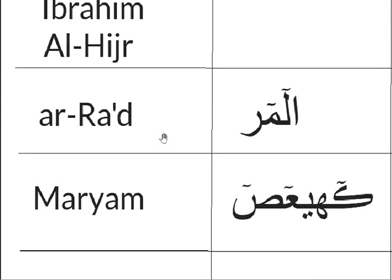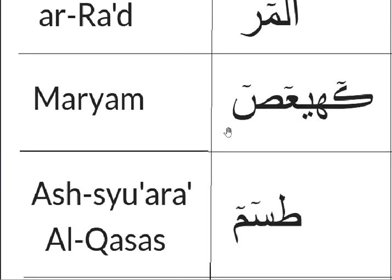One surah, Al-Ra'd, uses Alif, Lam, Mim, Ra. Alif, Lam — 6 harakat. Mim, Ra. Ro.